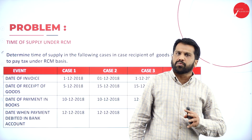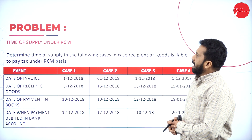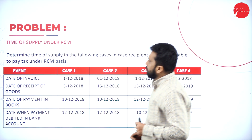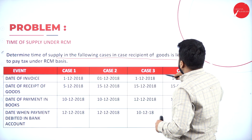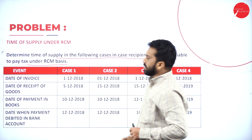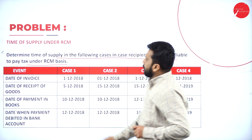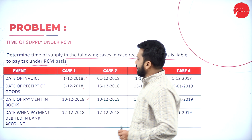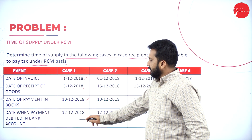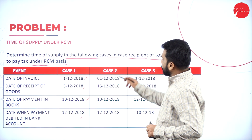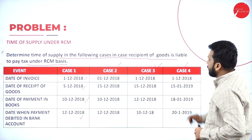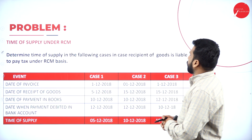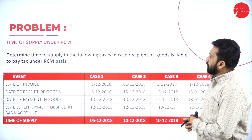Now we go to the last topic: Time of Supply under RCM — Reverse Charge Mechanism. The problem: determine time of supply in the following cases where the recipient of goods is liable to pay tax under RCM. Case 1 data: date of invoice 1st December, date of receipt of goods 5th December, date of payment 10th December, date when payment debited 12th December. We also have Cases 2, 3, and 4 which we will solve one by one.